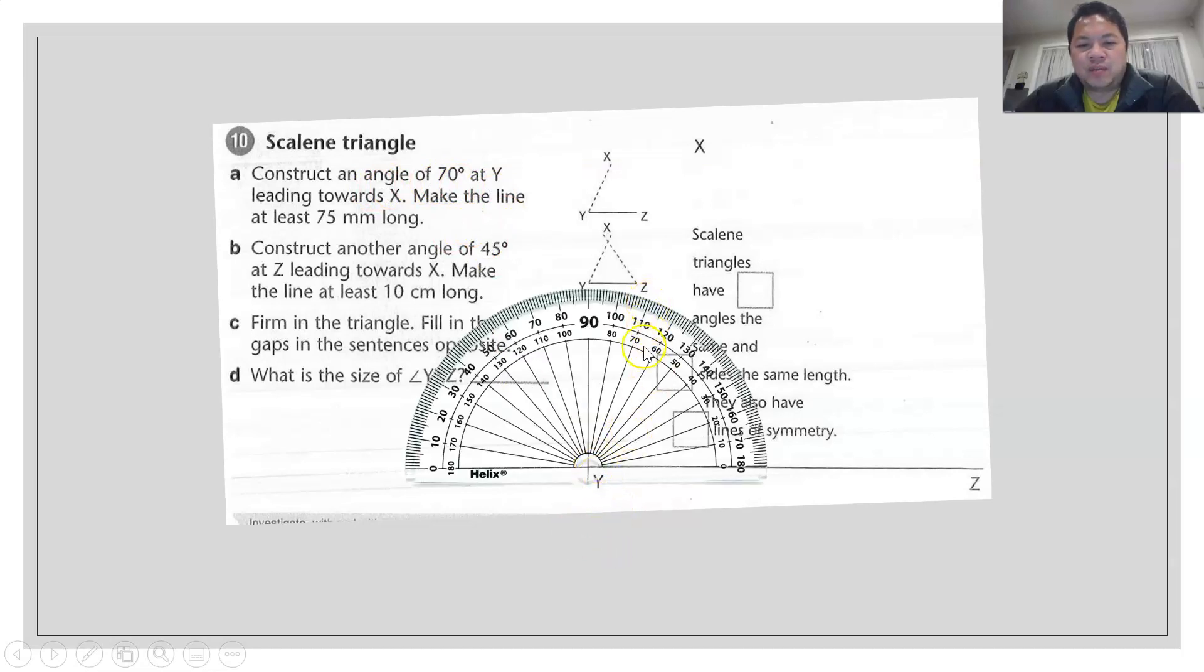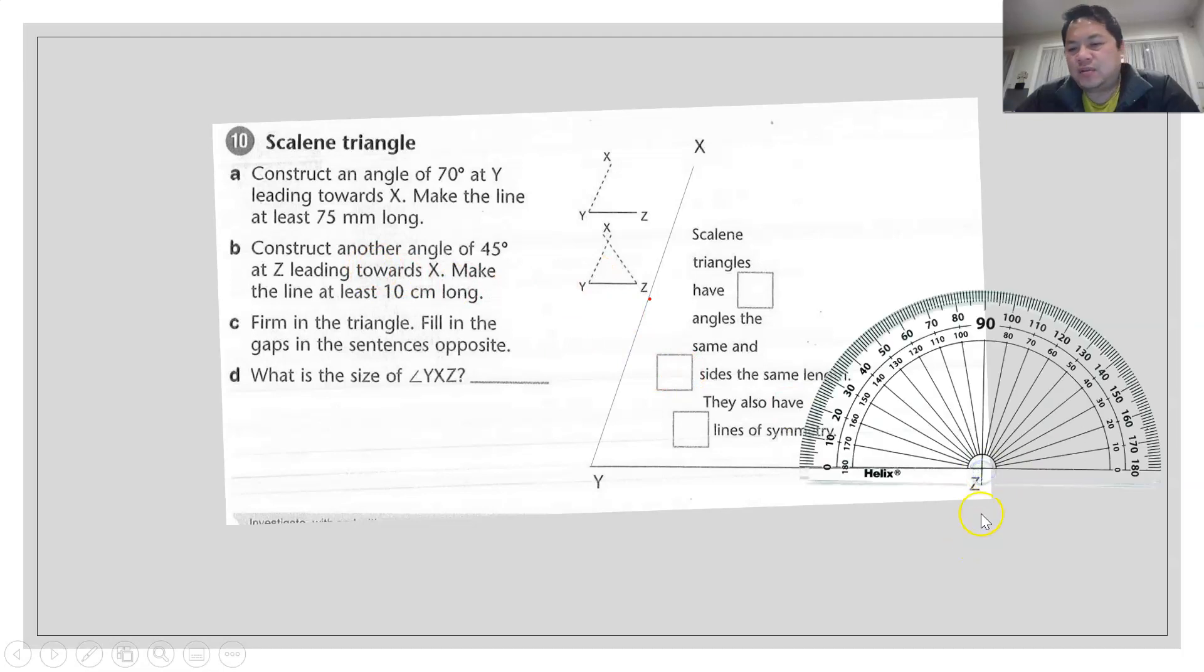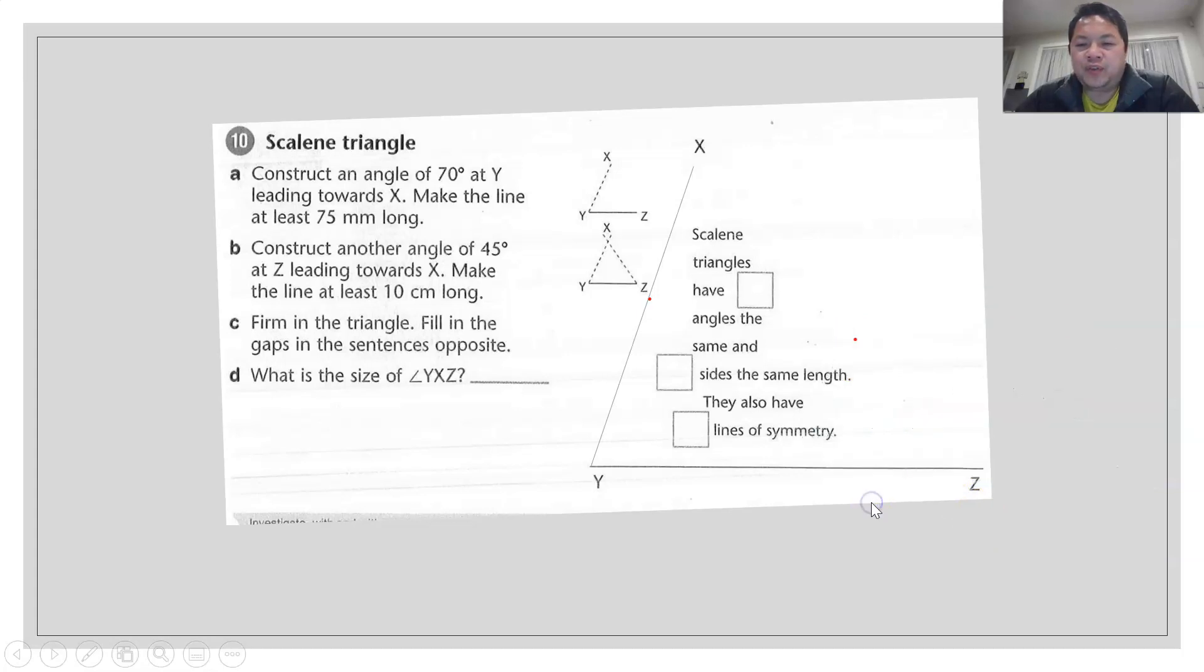70 degrees is somewhere here. I put a dot. The dot is there. I remove the triangle. Then I extend the line from Y to the red dot as far as possible. Doesn't really matter. And then from here, I need to construct another angle at Z, at 45 degrees angle. So where is 45 degrees? 45 degrees angle is somewhere around here. Put the dot there. That's right. Remove the protractor. And from Z, align with the dot, cut across.